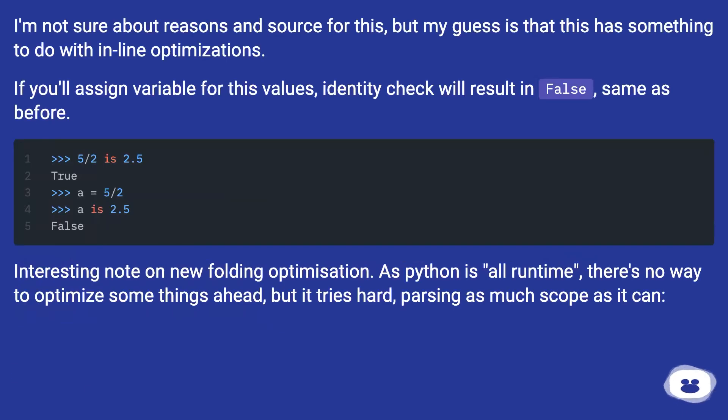I'm not sure about reasons and source for this, but my guess is that this has something to do with inline optimizations. If you'll assign variable for this values, identity check will result in False, same as before.